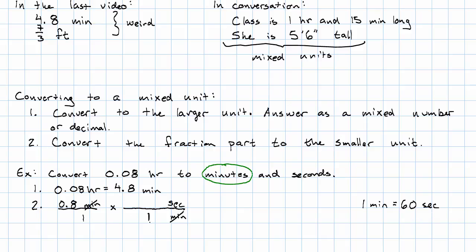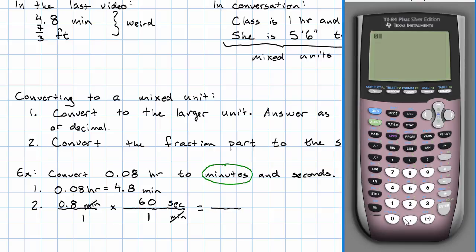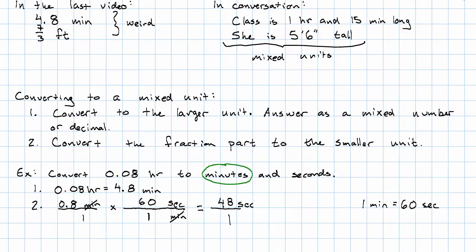So that means we've got 1 minute in the denominator, 60 seconds in the numerator. We multiply 0.8 times 60 is 48 seconds. In the denominator, 1 times 1 is 1. So what's our answer then? The 0.08 hours we started out with, that's 4.8 minutes, which is 4 minutes and 48 seconds. How did we get that mixed unit again? We converted just the fraction part to seconds.